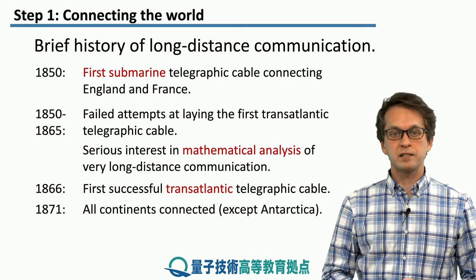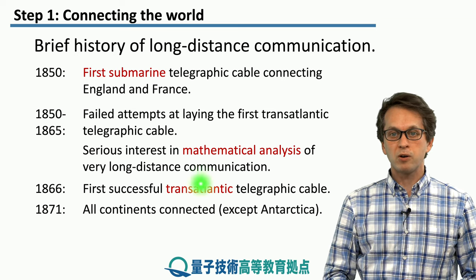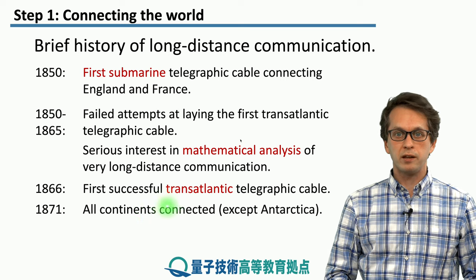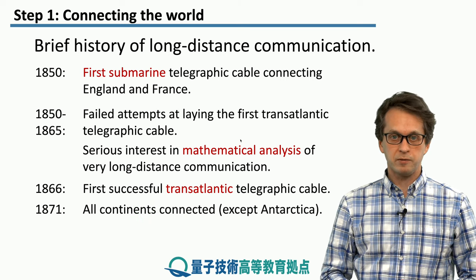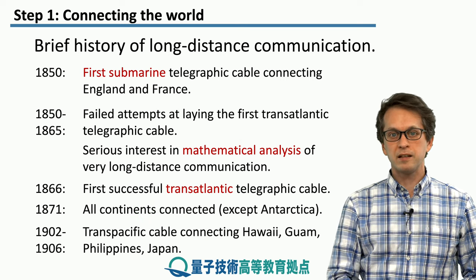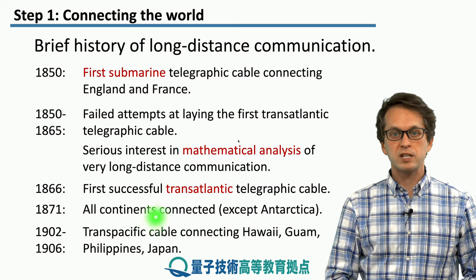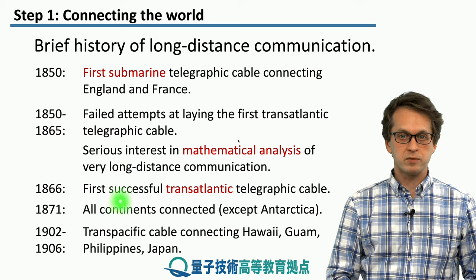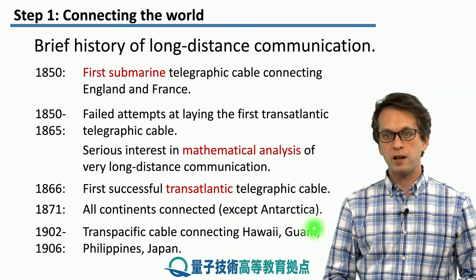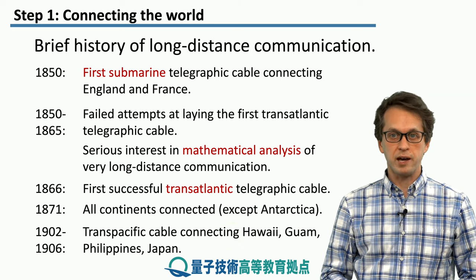By 1871, only a few years later, all the continents except for Antarctica were connected. Then between 1902 and 1906, the Trans-Pacific cables were laid, connecting the mainland US with Hawaii, Guam, and later the Philippines and finally Japan.